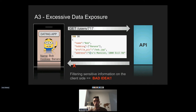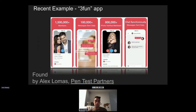But if you look at the traffic between the client and the API — the call to GET /users/717 — the response JSON contains name, hobbies, and profile picture, but also the address of the user, which is very sensitive information that shouldn't be exposed. Developers on the backend rely on frontend developers to filter out this data, and the frontend does hide it in the view — but filtering on the client side is a very bad idea because a basic attacker can just sniff the traffic and see all the information.